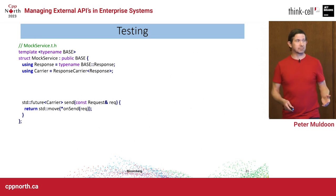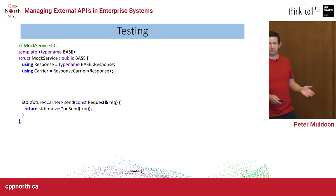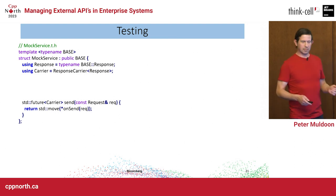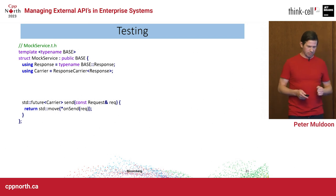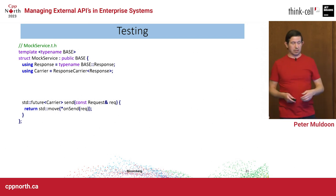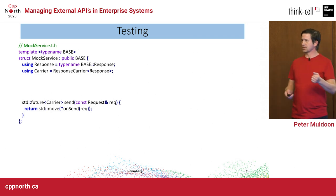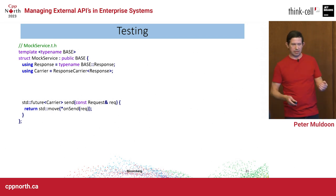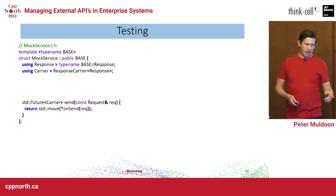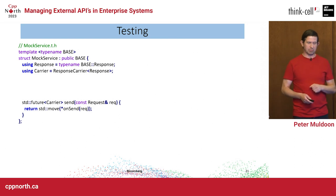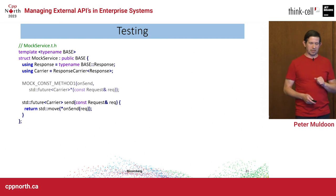Let's talk about testing — I'm a big proponent of testing, it's one of the main things I make sure gets done. I'm going to use Google Mock. I'll inherit off the base service, pull down the response carrier type with a using statement to make it easier, and have the same send function signature: takes a request and returns a future carrier.